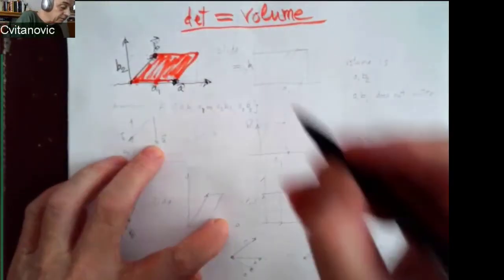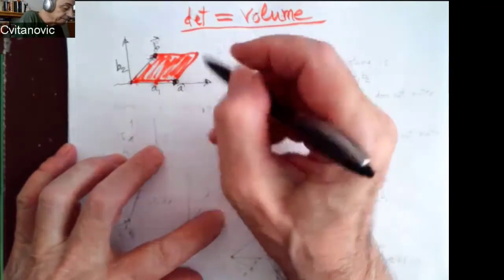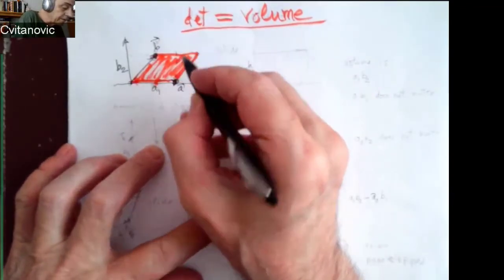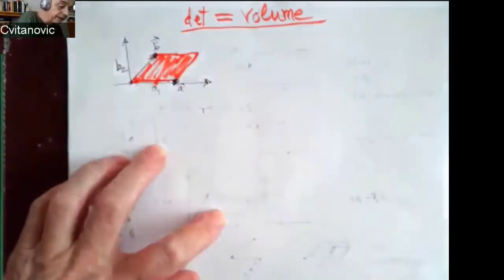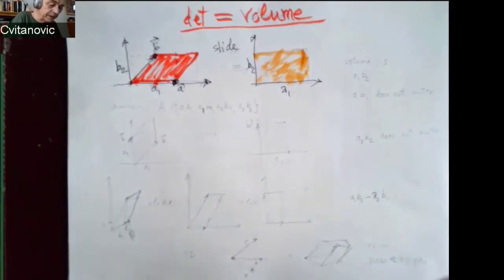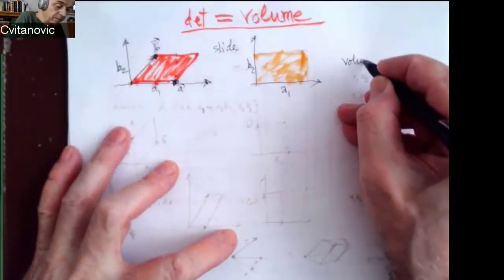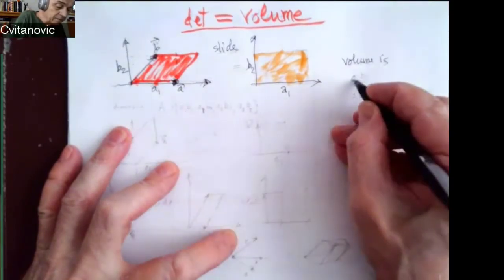B2 is along the y direction. Now, what I can do is I can cut out this triangle and just stick it in there, or I can just deform the whole thing. So slide it. I'll use the word volume in any dimension. A1 times B2.